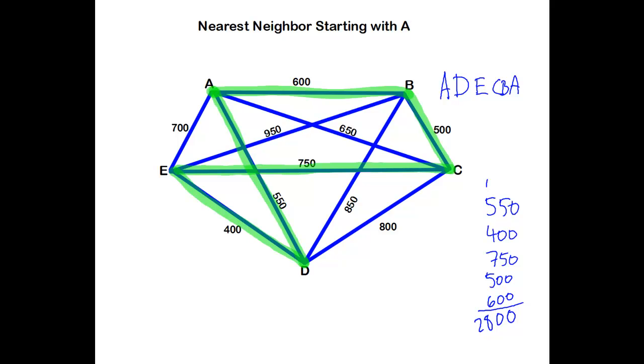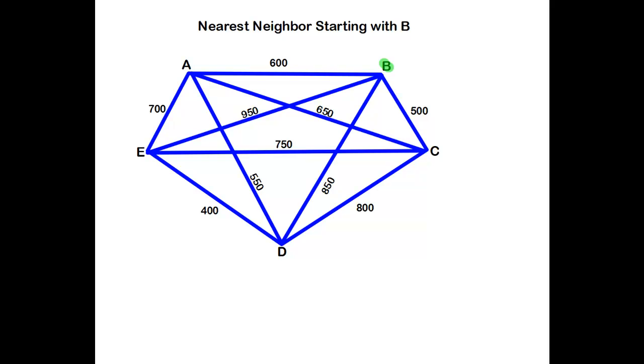Now if I start at a different courtesy, let's start at B. At B, I'm considering the 600, the 500, the 950, and the 850. So the 500 is the best. From there, I consider the 650, 750, or 800. 650. Then the 550 is next. Now I only have one option. That's the 400. And then from here, I need to complete my Hamiltonian circuit. There's my 950.